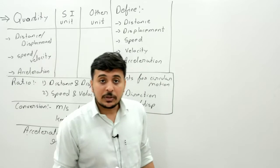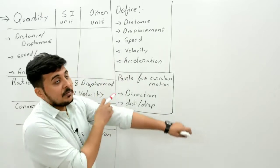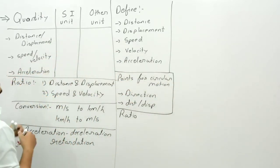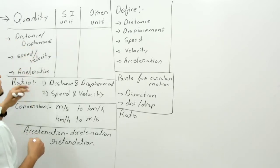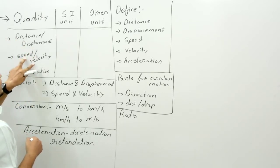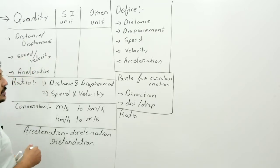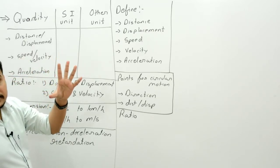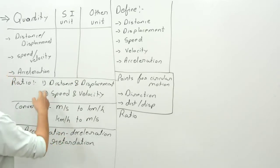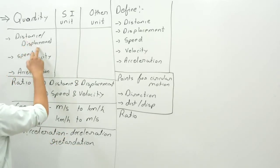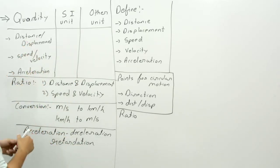Now here, for the first time, we are going to see the different units of distance, displacement, speed, velocity, and acceleration. The unit of distance and displacement are the same; the unit of speed and velocity are the same; and acceleration has its own unit. We have learned about 5 quantities in this chapter: distance, displacement, speed, velocity, and acceleration.